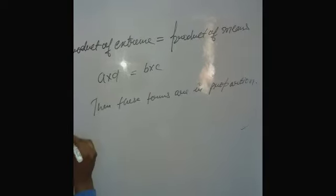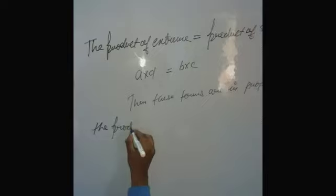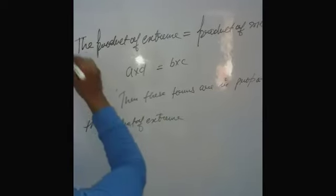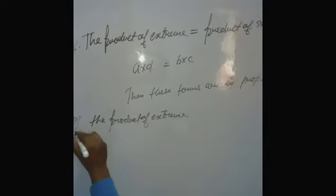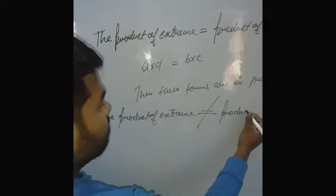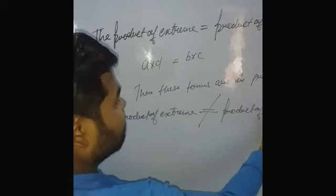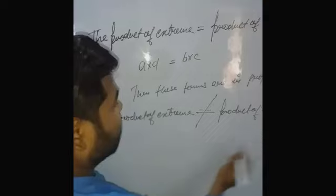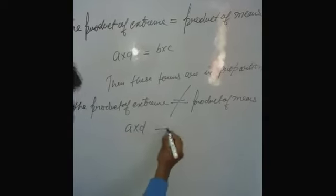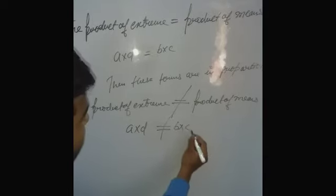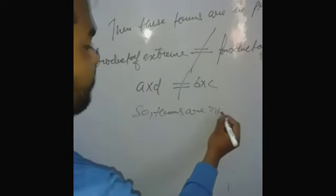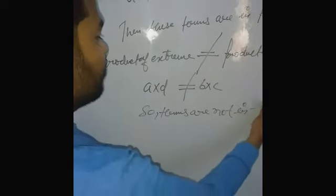If the product of extremes is not equal to the product of means, the terms are not in proportion. So the terms are not in proportion.